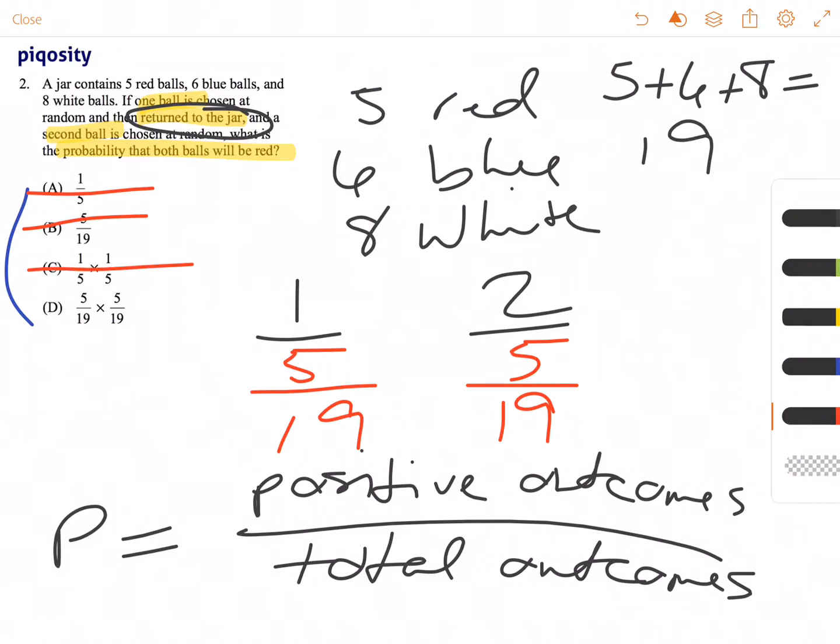D is our answer choice because the operation between two dependent events is always multiplication. So we have 5 over 19 times 5 over 19. So thankfully we don't have to try to figure out what that is by multiplying across. We just have our answer choice there.